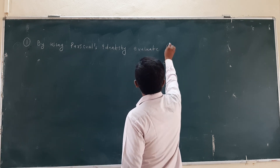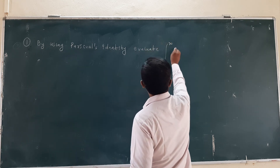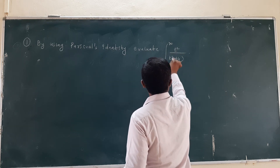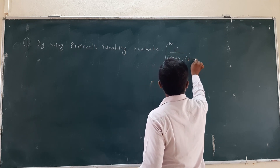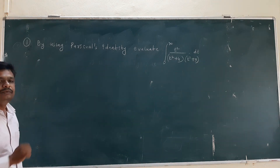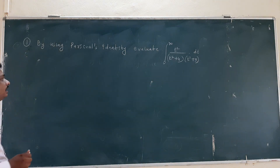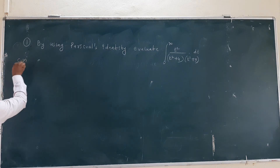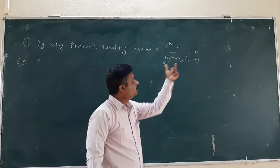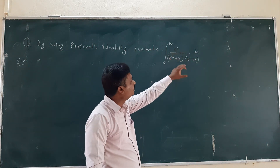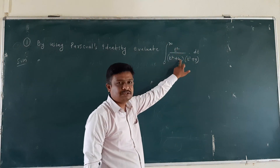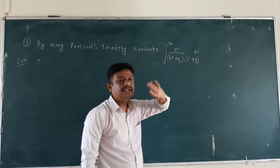Now we will take one example based on Parseval's Identity. Evaluate: integration 0 to infinity, t square upon t square plus 4, into t square plus 9, into dt. So we have to evaluate this result.